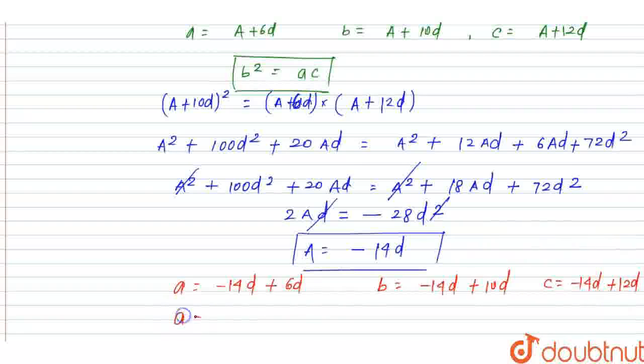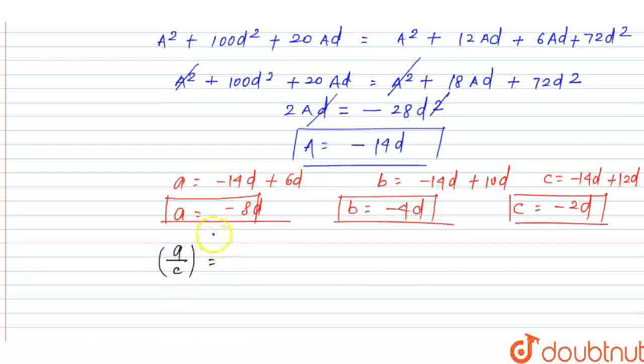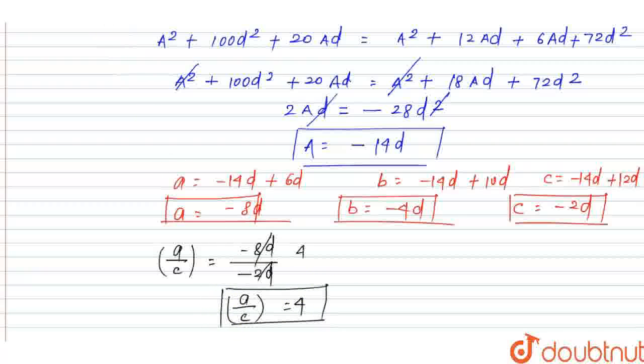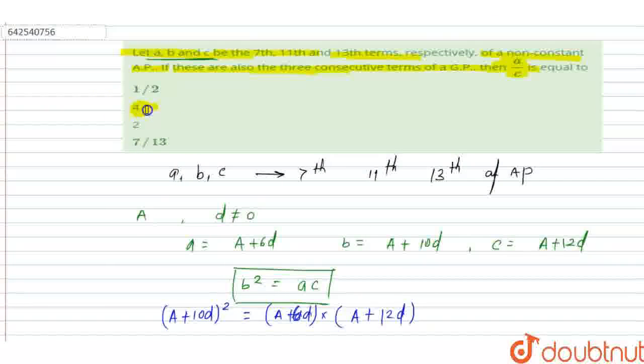So a = -8d, b = -4d, and c = -2d. We have to find the value of a/c. a/c = (-8d)/(-2d) = 4. This is the right answer, and when we see the options, option B is correct. Thank you.